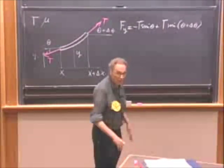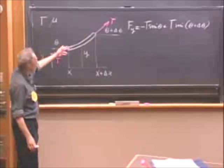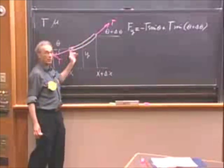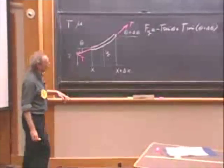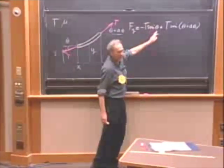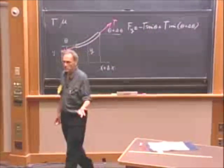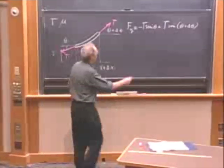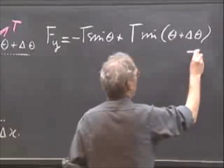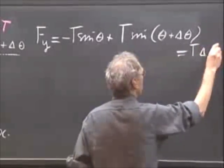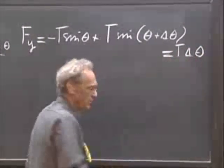But for small angles, and we have to have small angles because otherwise all our assumptions are wrong, T's are not the same. But for small angles, the sine of theta is the same as theta in radians. And so this becomes theta, this becomes theta plus delta theta. And so this thing becomes T delta theta. That's an approximation for small angles.